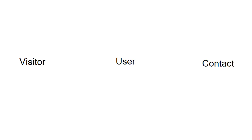Before I explain how to identify contacts and why to identify contacts, I'd like to explain the differences between visitors, users and contacts. A visitor is someone who is visiting a website. A user is someone who has a membership account and can login to our website. And a contact is just a collection of marketing data — all the interactions, page events and goals that have been triggered and collected for a visitor.